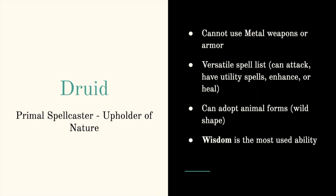Next is a druid. A druid is a primal spell caster and an upholder of nature. They cannot use metal weapons or armor due to this. However, they have a very versatile spell list — they can attack, have utility spells, enhance themselves or their party members, or even heal. They can adopt animal forms at a certain level, known as wild shape, and as that animal they can be heavy combatants. Wisdom is the most used ability for a druid.